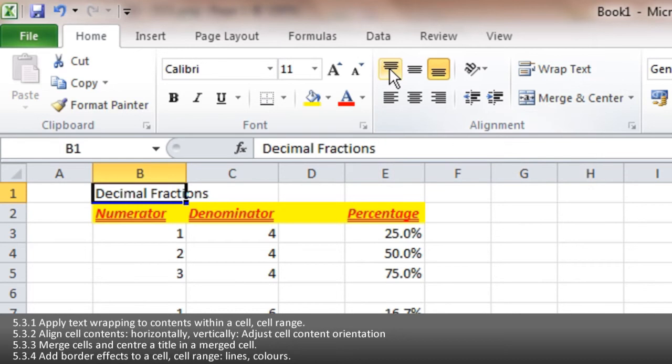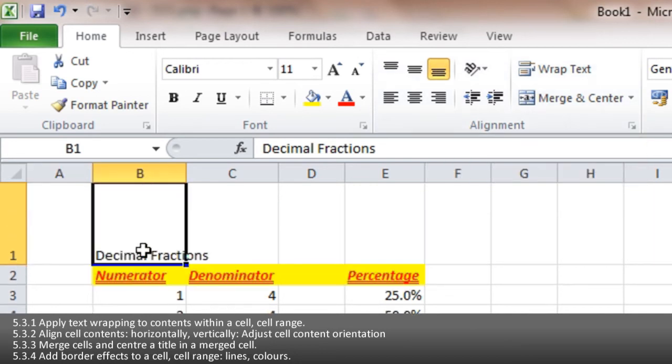You've got this section which controls whether words and contents are aligned at the top of the box, middle, or at the bottom. If I stretch this one out, you can see what I mean. At the moment that's aligned at the bottom. See the orange tab here? I can push it to the top, have it in the middle, or at the bottom.